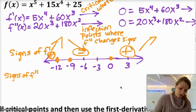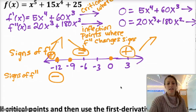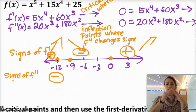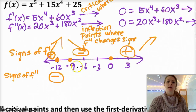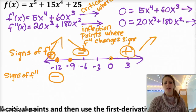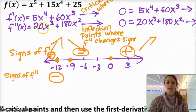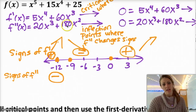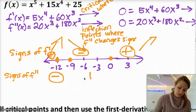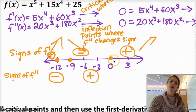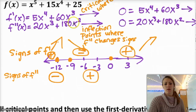Between negative 9 and 0, I'll pick negative 1 again. When I plug in negative 1, I have negative 20 plus 180, which is positive. So f double prime is positive between negative 9 and 0. Then to the right of 0, I pick x equals 1: 20 times 1 cubed is 20, plus 180 times 1. That's positive as well.